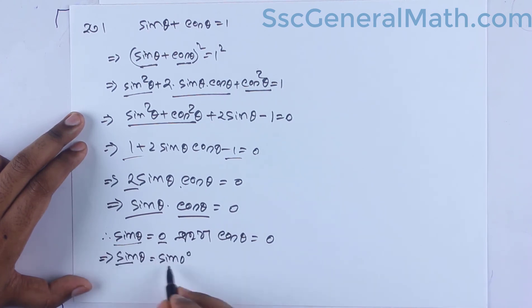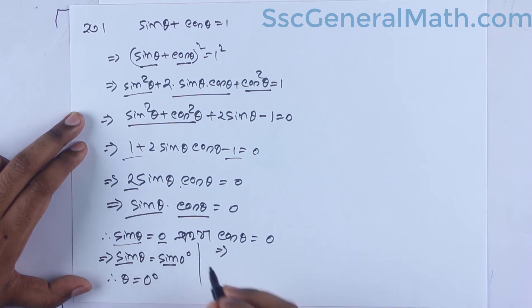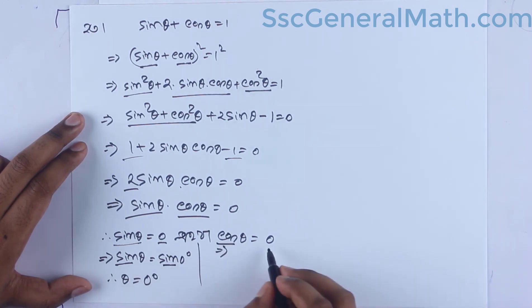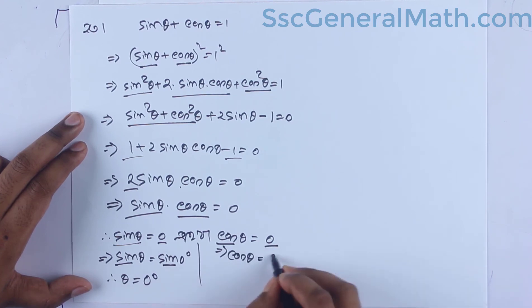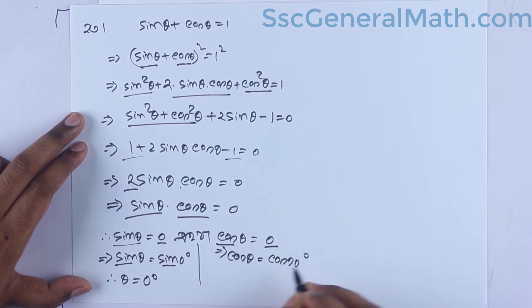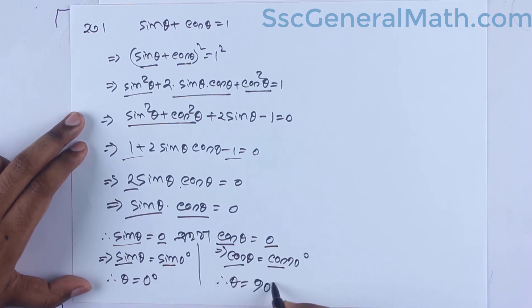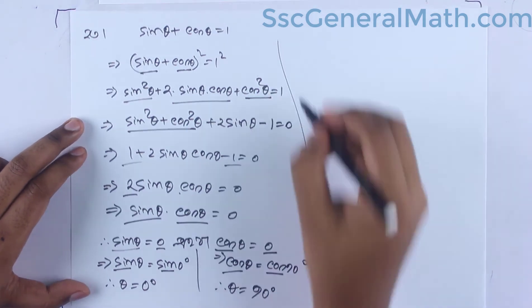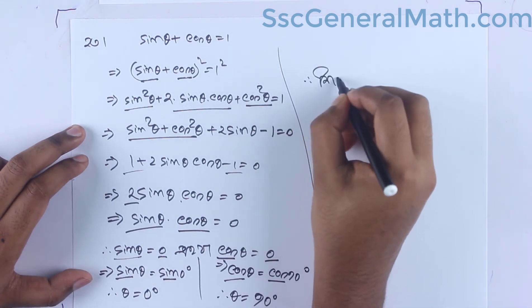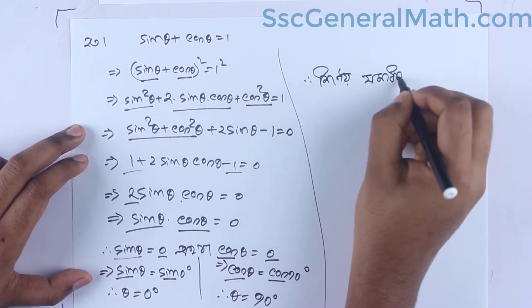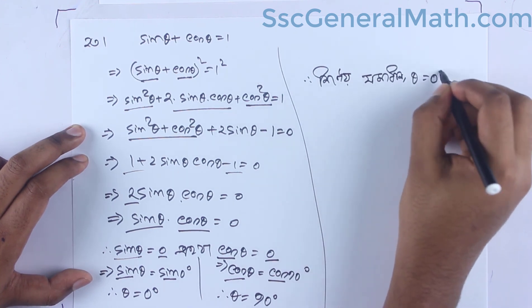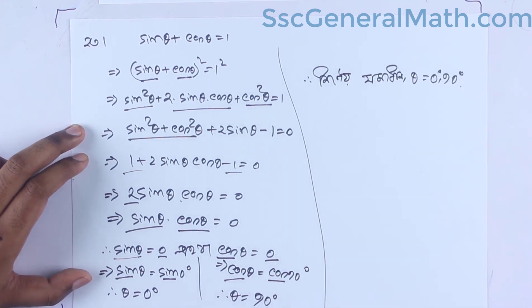Since sin theta is 0, cos theta — and if cos theta equals 0, then cos 90 degrees equals 0, meaning theta equals 90 degrees.